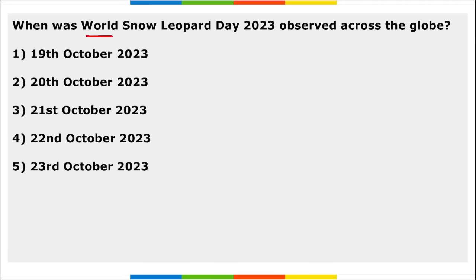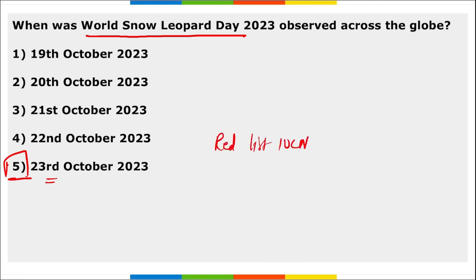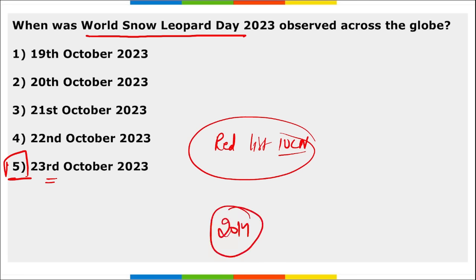Next, when was World Snow Leopard Day observed across the globe? World Snow Leopard Day is observed on 23rd October — to create awareness about the conservation of snow leopards, one of the most endangered big cats in their natural habitat. Snow leopards are listed in the IUCN Red List for threatened species, and this day was first observed in 2014.